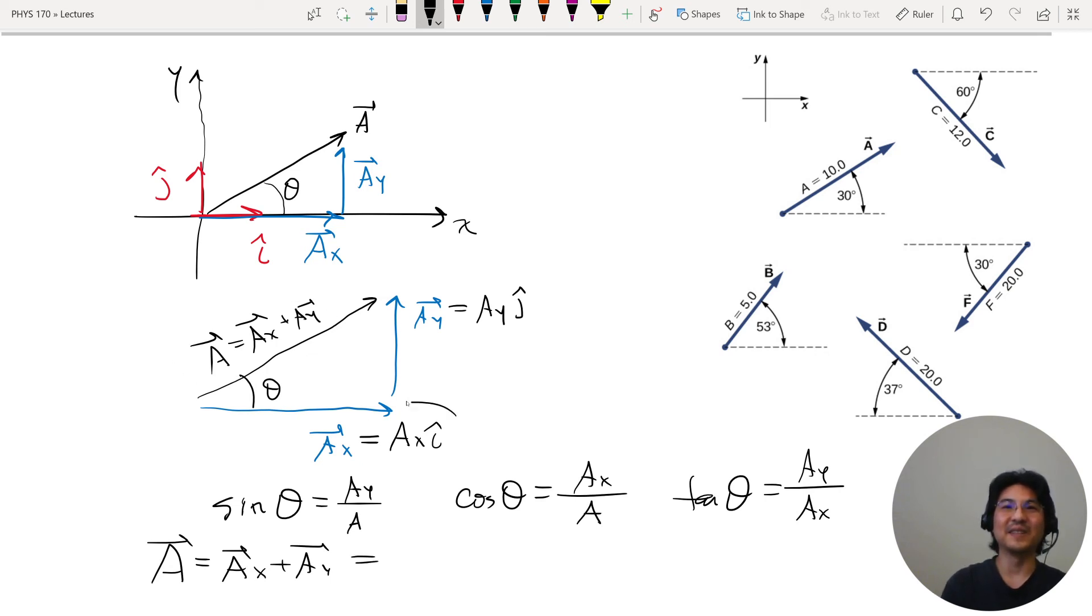So if we mix all of this together, here's vector A is Ax plus Ay. Ax is some magnitude and here's the direction, Ay is some magnitude and here's the direction. And then if we mix in the trigonometry, it depends on how you draw the picture, but for this picture, Ax is A cosine theta, and then Ay is A sine theta.